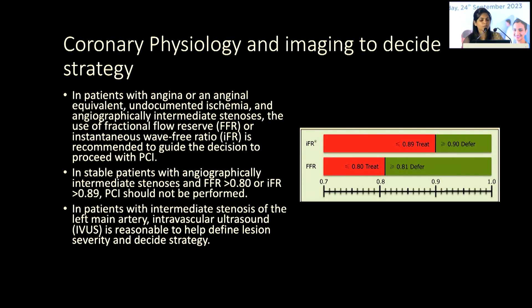Coming to coronary physiology and imaging to decide strategy: various trials have shown that imaging-guided and physiology-guided PCI is superior to angiography-guided alone. For intermediate lesions — 50–70% stenosis — where angiography is borderline, we can use FFR as a physiological assessment. For left main lesions, we can use IVUS to decide whether to revascularize that particular coronary artery.